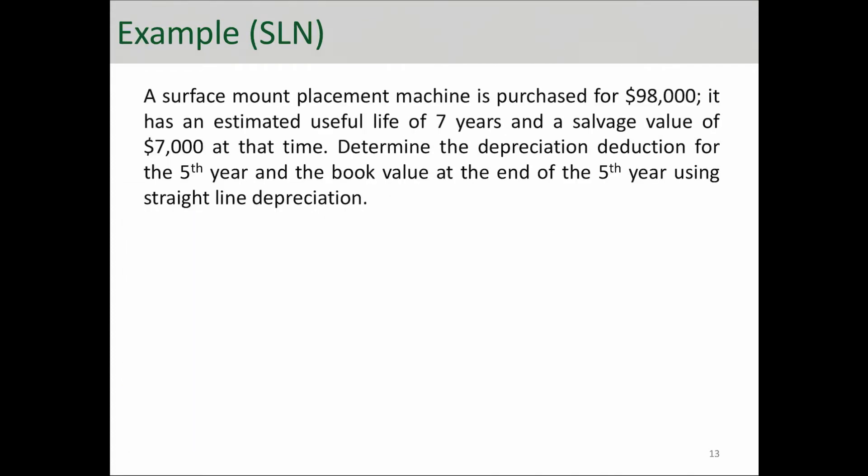Let's take a look at one example. A surface mount placement machine is purchased for $98,000. It has an estimated useful life of seven years and a salvage value of $7,000. Determine the depreciation deduction for the fifth year and the book value at the end of fifth year using straight line depreciation.